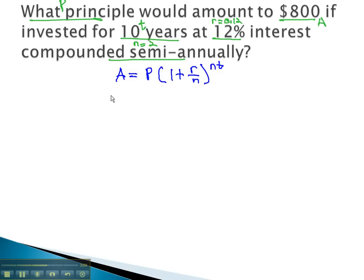Plugging this into our formula, A is 800, equals the principal we're looking for, times 1 plus our rate, 0.12, over the number of compounds 2, to the nt, or 2 times 10.